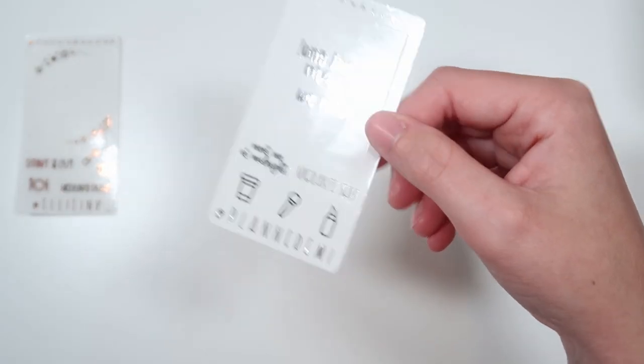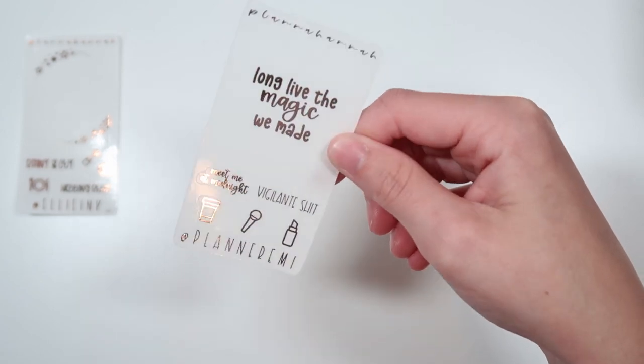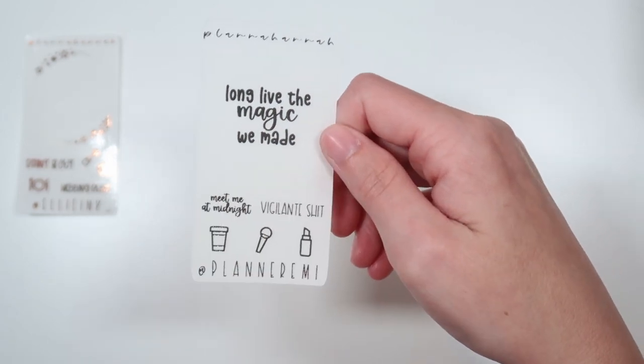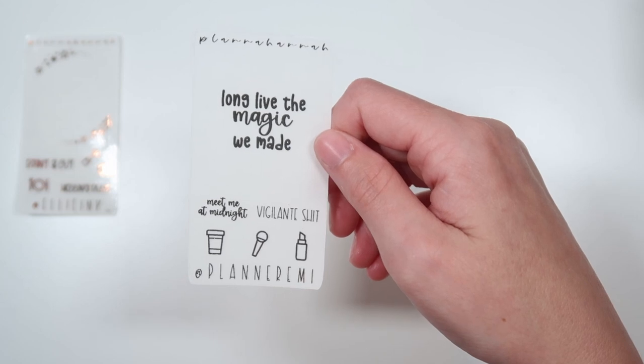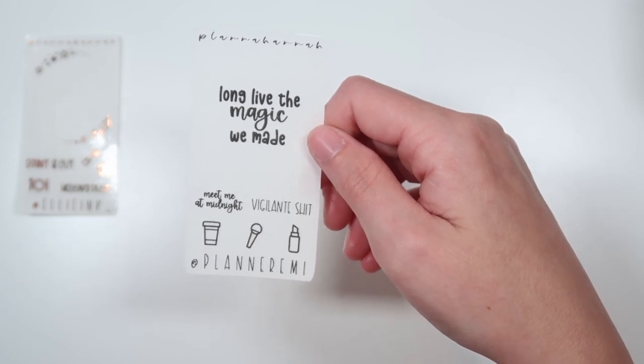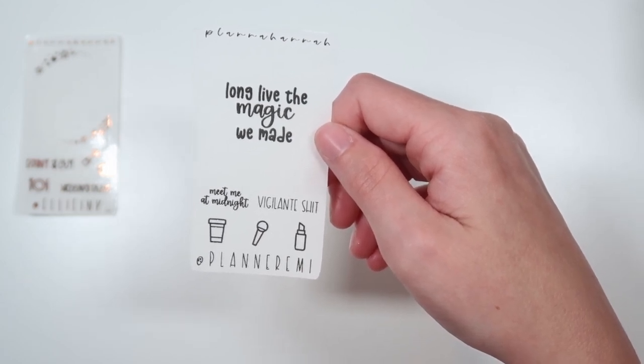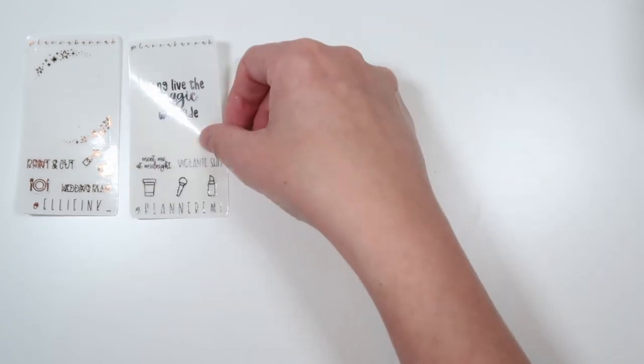You can put Emily in the notes, E-M-I-L-I, to get her freebie. This is being shown in silver. It's Taylor Swift themed. We have a quote of long live the magic we made. Then we have the scripts of meet me at midnight and vigilante shit. And then we have the coffee cup, the microphone, and the lipstick.